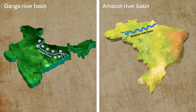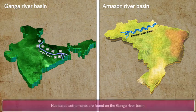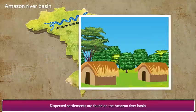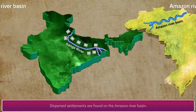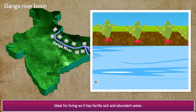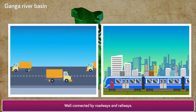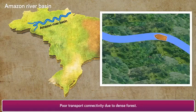Let's do a comparative study on differences between human settlements on the banks of river Ganga and river Amazon. Nucleated settlements are found on the Ganga river basin, while dispersed settlements are found on the Amazon river basin. The Ganga basin is ideal for living as it has fertile soil and abundant water, whereas the Amazon basin is unsuitable for living due to marshy lands and dense forest. The Ganga region is well connected by roadways and railways, while the Amazon has poor transport connectivity due to dense forest.